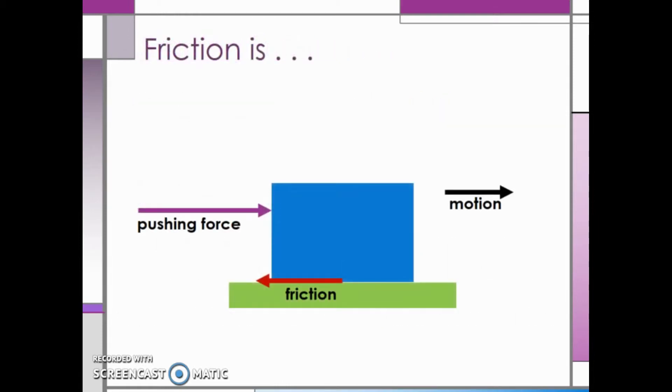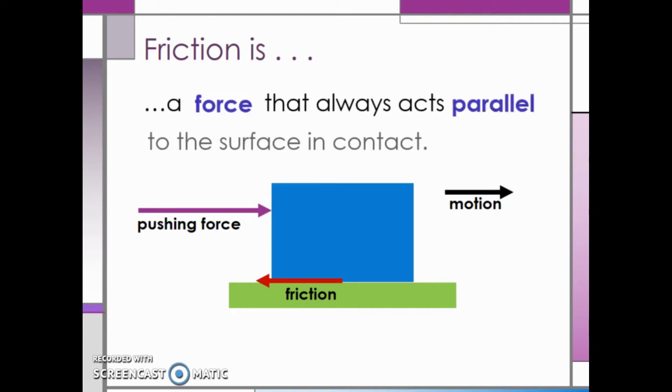One other thing to remember about friction: it is a force that always acts parallel to the surfaces in contact. In this picture, we have a box resting on the floor. We apply a force to the box, which is the pushing force, so the box moves from left to right. Friction acts parallel to the box and floor and opposes the motion, meaning the force arrow for friction points in the opposite direction of motion.